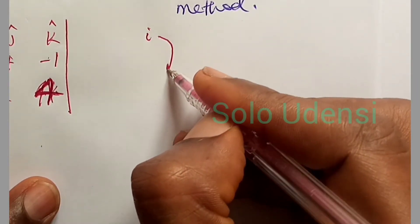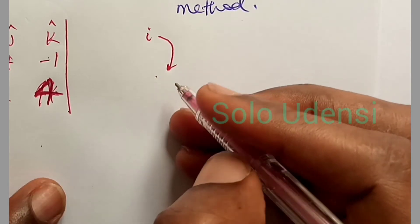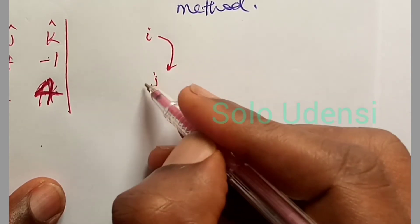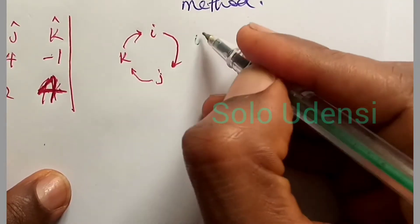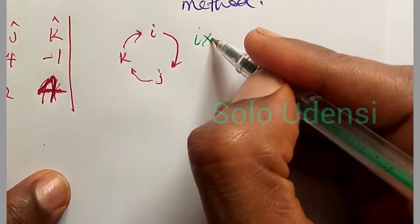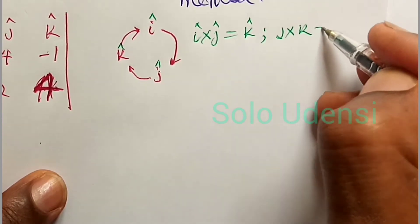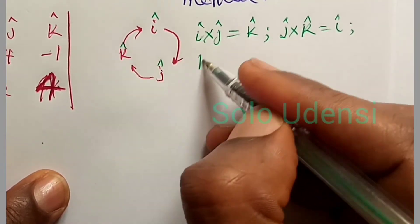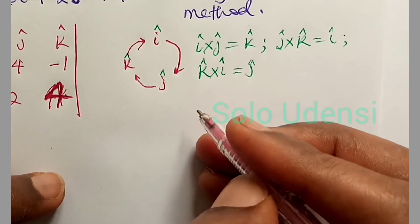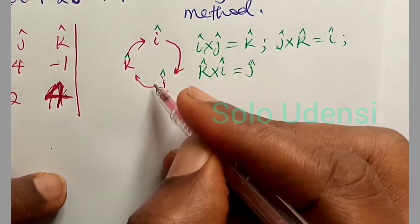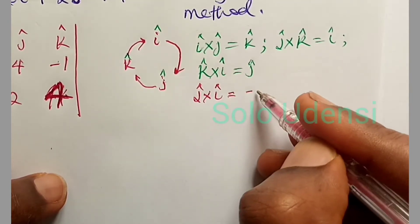Before we proceed, we must remember the cyclic nature of multiplying vector products I, J, K. So if we say I cross J, we get K. J cross K, we get î. K cross I, we get ĵ. But if we move anti-clockwise — for instance, if we say J cross I — we get minus K.